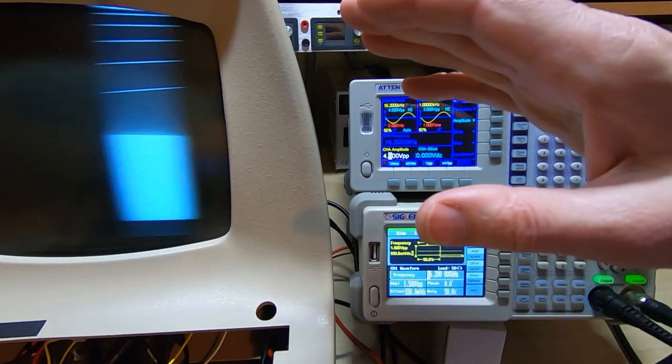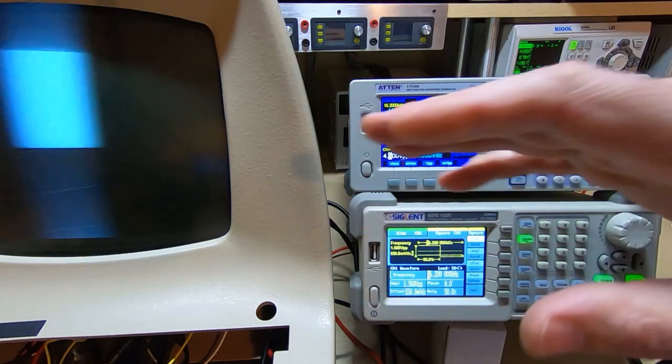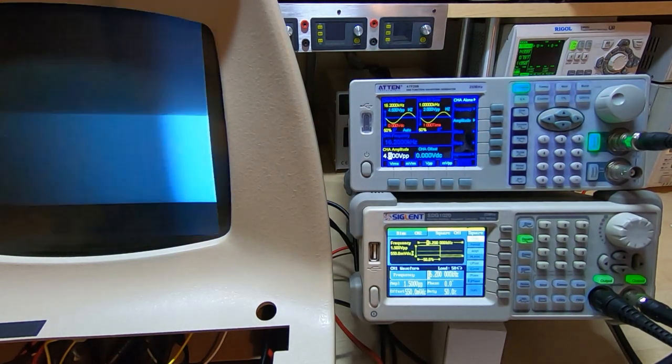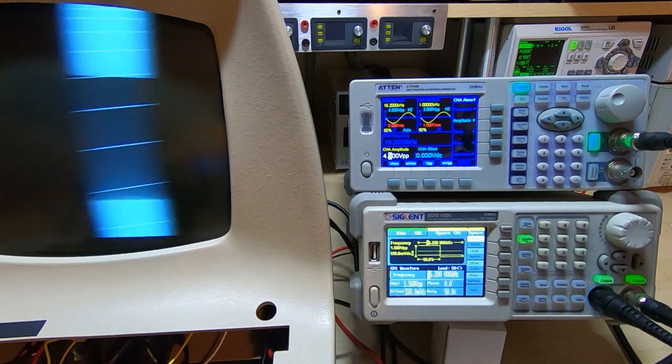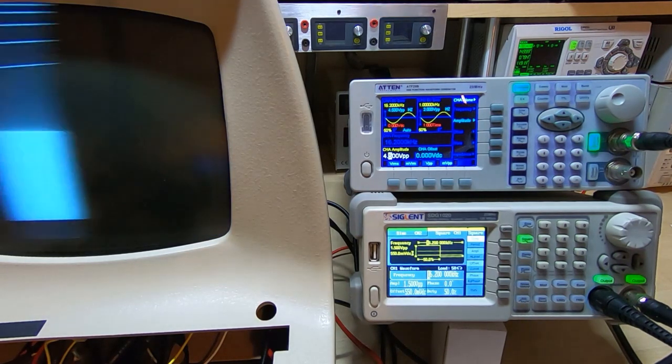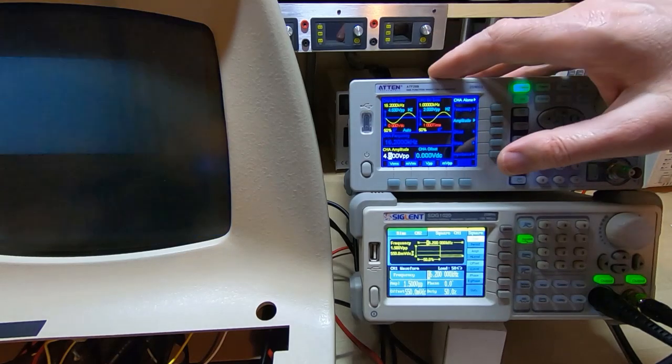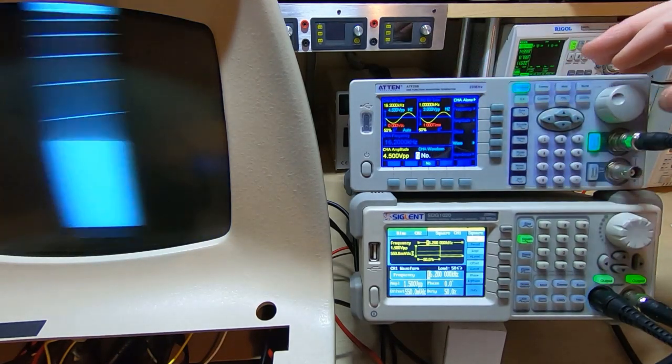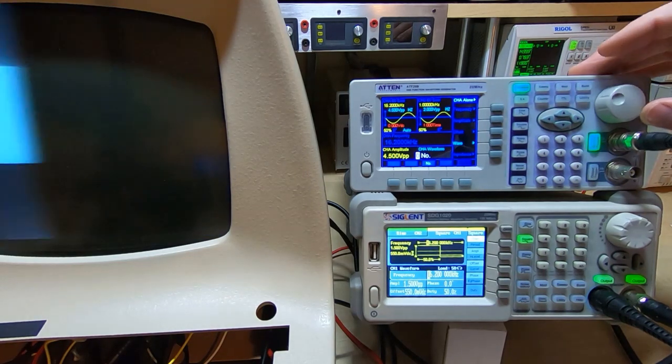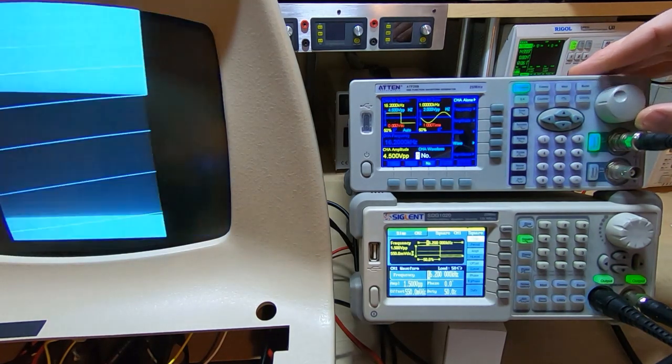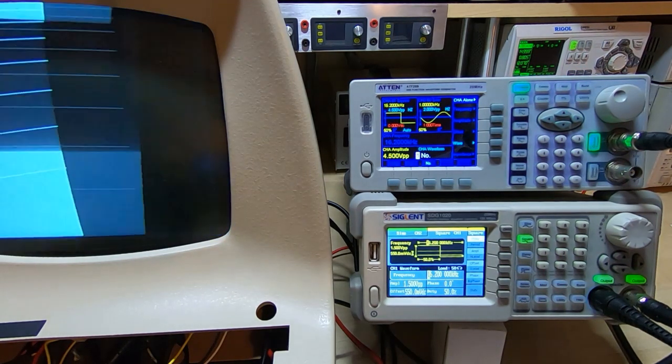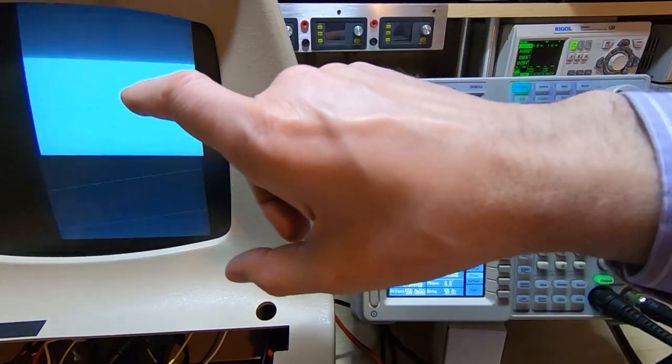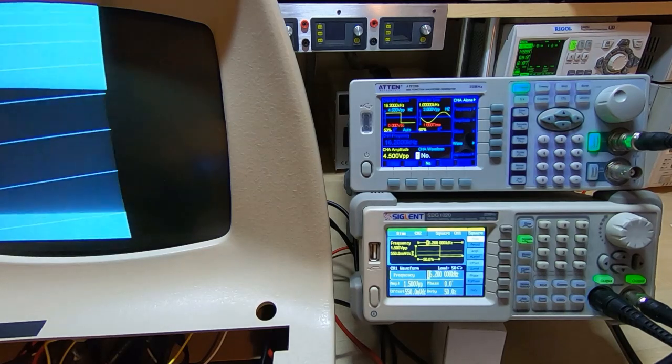Also, the flickering that you're seeing on the camera in the vertical sense is not present on the monitor when you look at it directly. That's just an artifact of the video camera that I'm using. So what we'll do now is we'll change the waveform we're feeding into the video input of the monitor. We'll go from a sine wave and this is now a square wave. So we're now seeing what we would expect to see and that we're getting a block of white going across the screen.